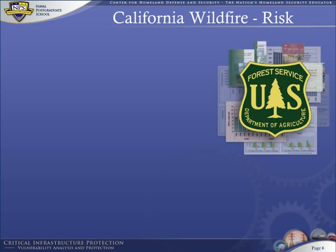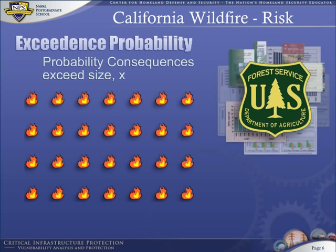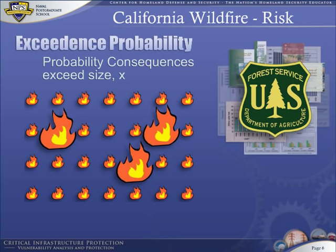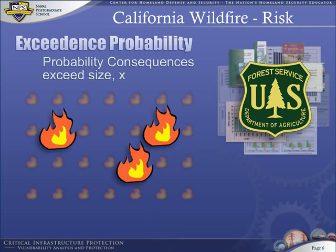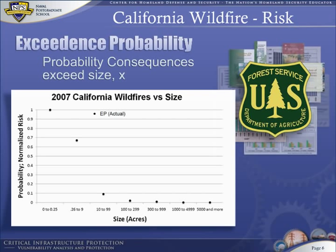How bad are these fires? How often do they occur? Are California wildfires high or low risk hazards? These questions are answered by analyzing historical data provided by the U.S. Forest Service. Exceedance probability is the probability that a fire consumes so many acres or more each time a fire breaks out — it ranks forest fires according to the fraction of all fires that exceed a certain size. Merely count the number of fires of a certain size or more and normalize the counts so they sum to 100%. Doing this with the U.S. Forest Service data provides the black dots in this chart.